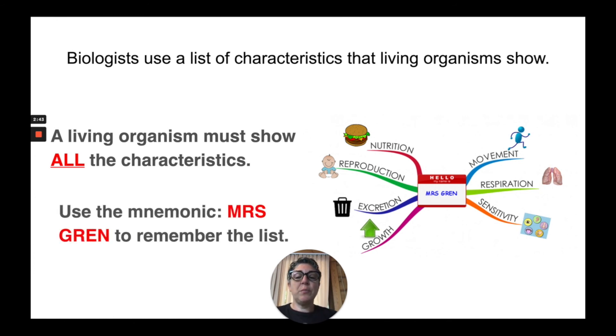You can use the mnemonic MRS GREN to remember the list of seven characteristics. And we have been looking at the G in MRS GREN for growth.